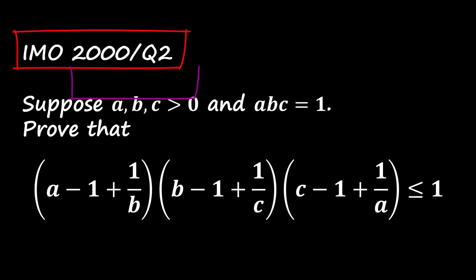We are given that three positive numbers A, B, and C satisfy the condition that A times B times C equals 1. We need to prove that the following expression is less than or equal to 1, the product of three terms.